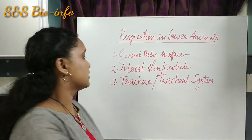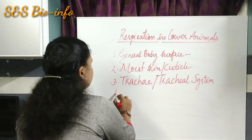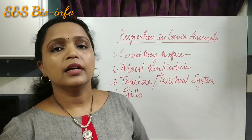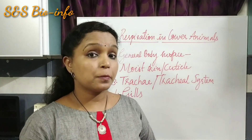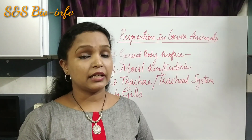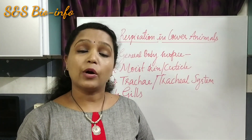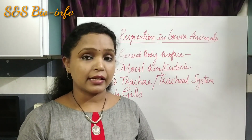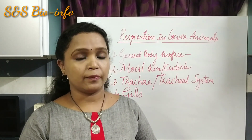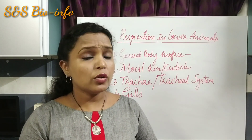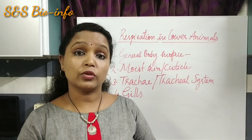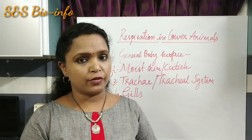The fourth one is gills. Gills are the specific respiratory organs of most invertebrates like aquatic arthropods, aquatic insects, mollusca, and hemichordata. Some vertebrates also possess gills, like fish and the tadpoles of frogs.